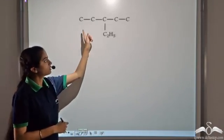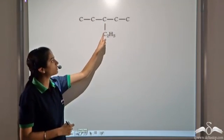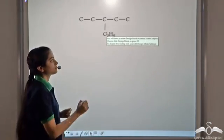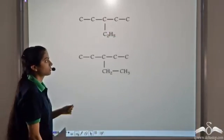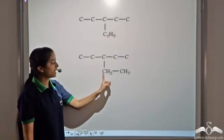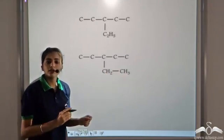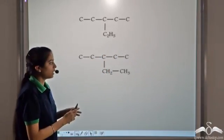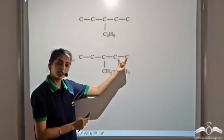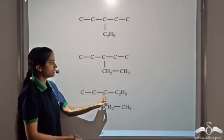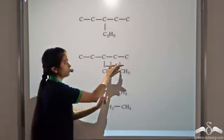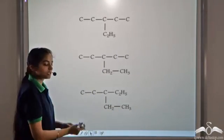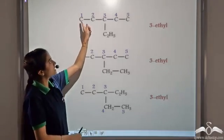Let's take another organic compound. We have 5 carbon atoms and a C2H5 group. Let's expand this C2H5 — we can write it as CH2CH3. When nothing is written, we replace it with hydrogen atoms. So this C2H5 can be expanded as CH2CH3, giving us a carbon chain attached to a C2H5 group.